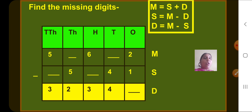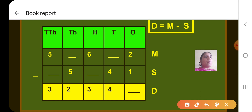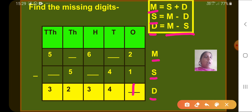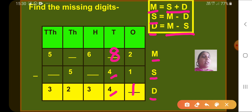Let's solve an example on finding missing digits. Starting from the ones place: minuend and subtrahend are given, so difference equals minuend minus subtrahend — 2 minus 1 gives 1. In the tens column, we need to find the minuend: subtrahend is 4 and difference is 4, so 4 plus 4 gives minuend of 8. In the hundreds column, we need the subtrahend: minuend is 6 and difference is 3, so 6 minus 3 gives subtrahend of 3.